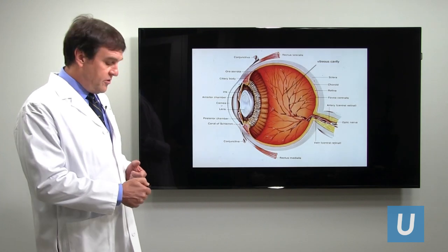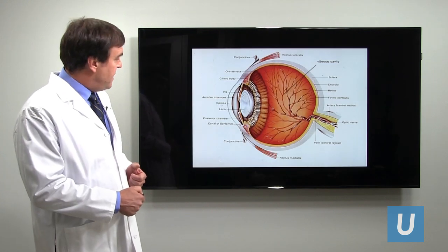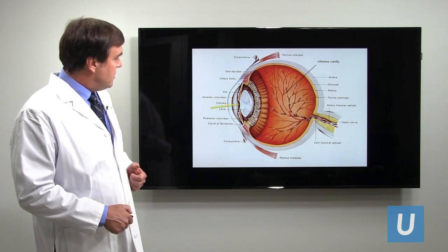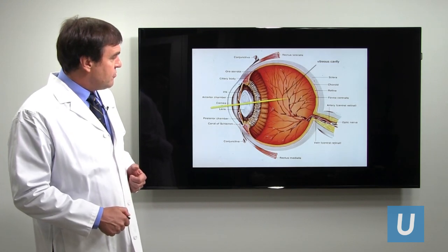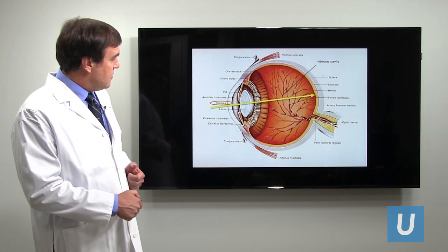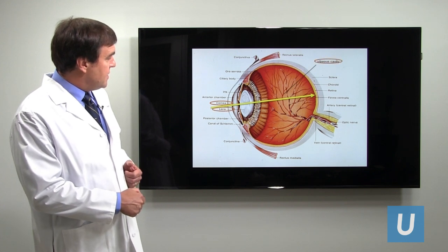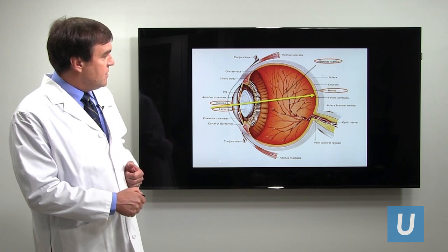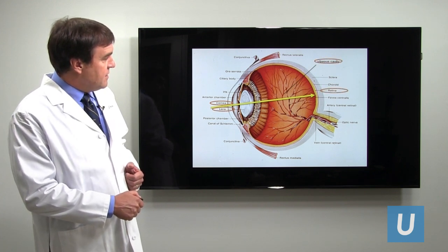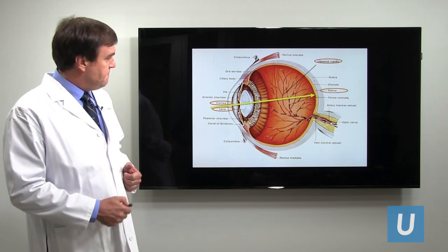Here's a diagram of the light passing through the structures to hit the back of the eye, going through all these important structures: cornea, lens, vitreous cavity, and retina.